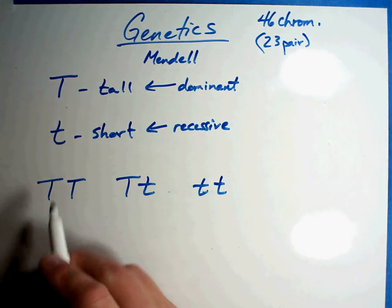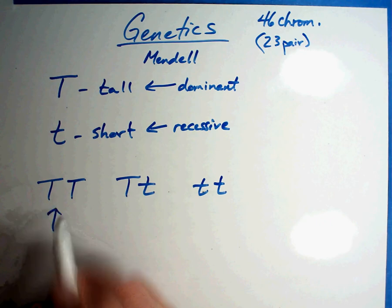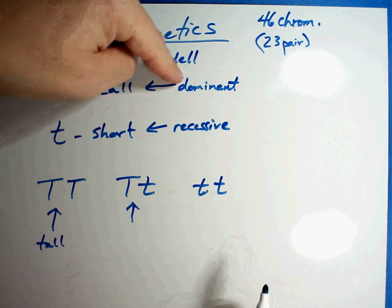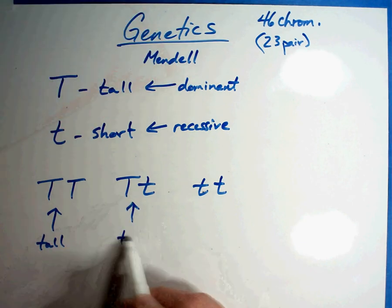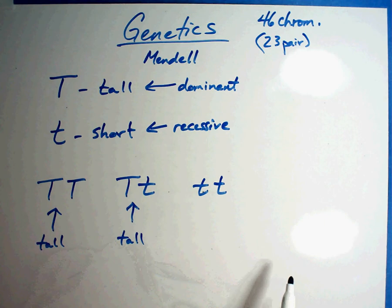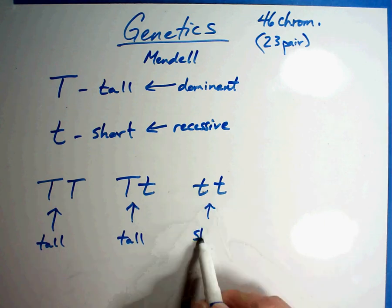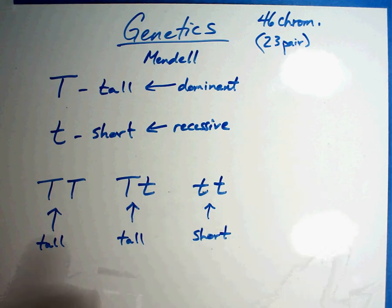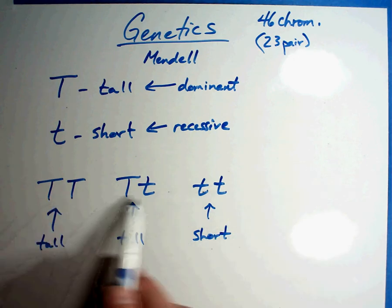First, is this one tall or short? Well, I see two of the dominant genes. This is going to be a tall plant. I see a big T and a little t. Well, that dominating gene here is going to cover up the recessive. This one is also going to be tall. In this case, I have two short genes. This is the way you get a short plant.